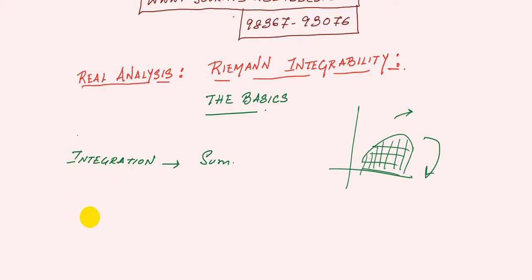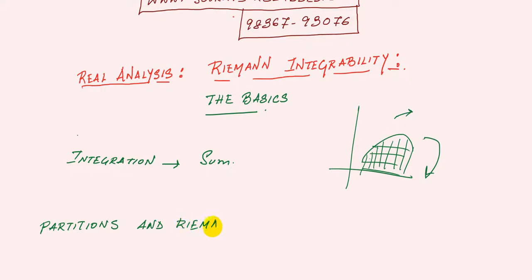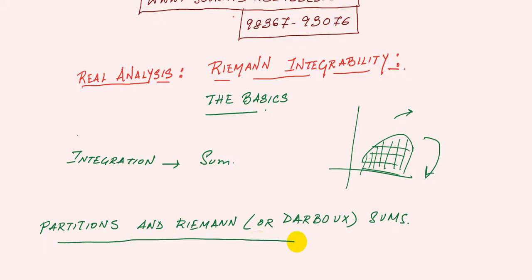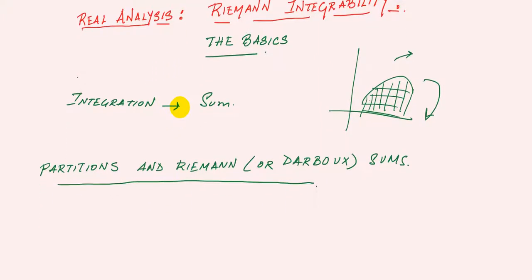First we will define something called partitions or Darboux sums — partitions and Riemann or Darboux sums. Let's start with what is called a partition of a closed interval.